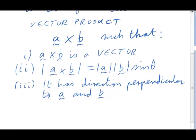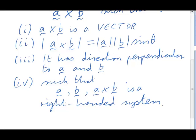We choose the direction to have the sense that the triple a, b, a cross b in that order form a right-handed system. Those four specifications are enough to completely determine what is meant by the vector product.